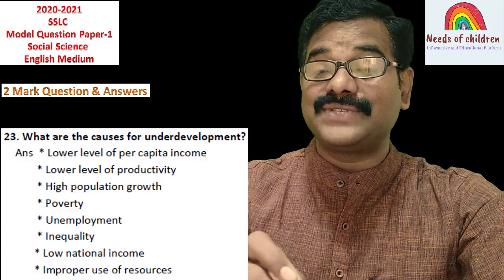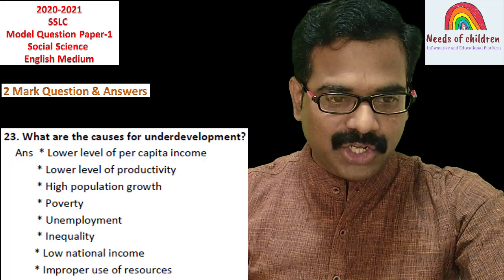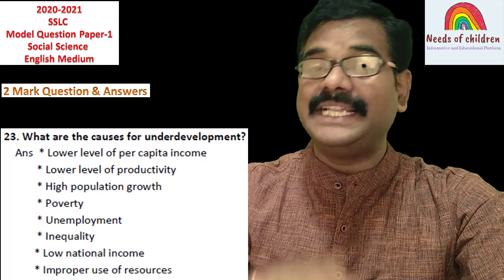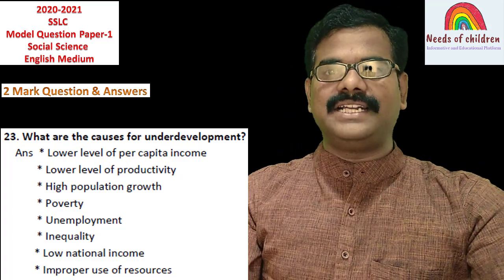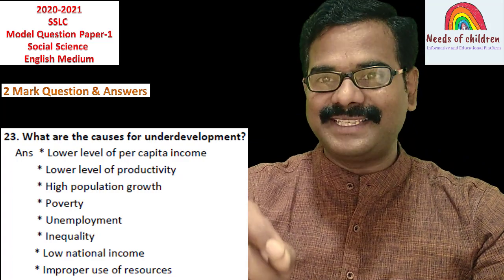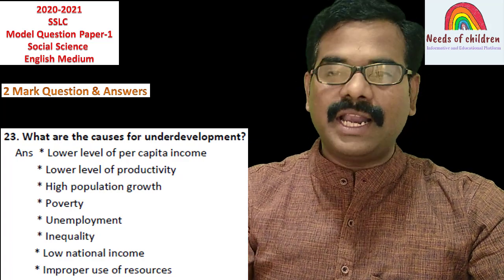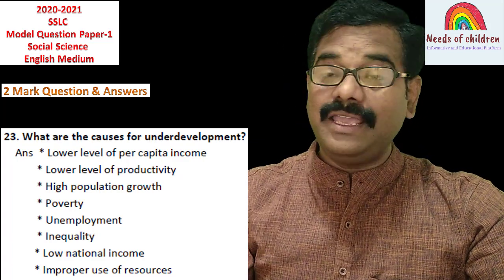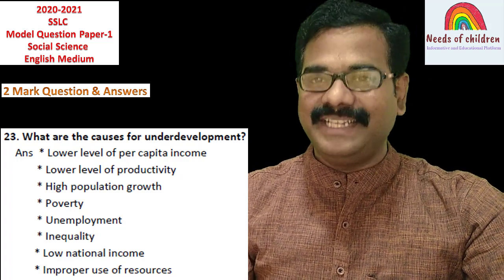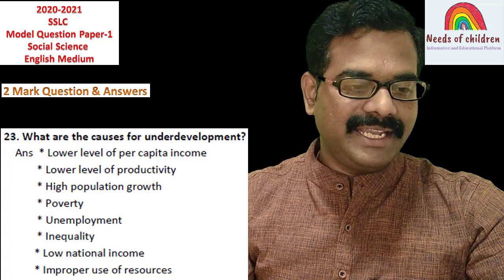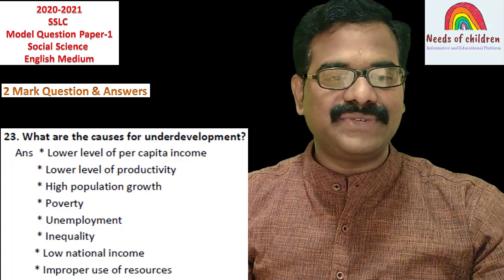Question number 23: What are the causes for underdevelopment? This is from Economics, Chapter Number 1 — Development. The answer: lower level of per capita income, lower level of productivity, high population growth, poverty, unemployment, inequality, low national income, and improper use of resources.